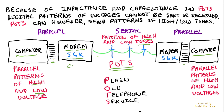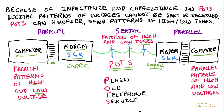So the modem would have inside it a codec to compress the information, send it through, and on the other modem there would also be the same codec to decompress that information, giving you higher throughput through the plain old telephone service. The digital information would go from parallel to serial, converted to tones, compressed, sent through the telephone service, then decompressed, converted from tones back to digital highs and lows, into a parallel format for the computer to understand at the receiving end.